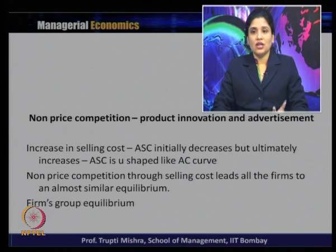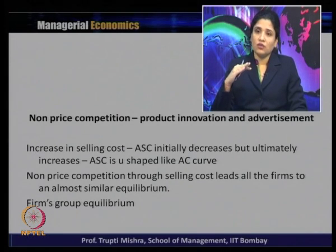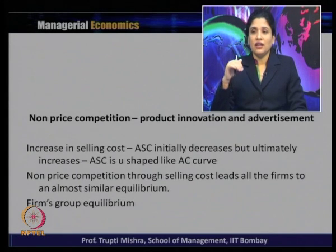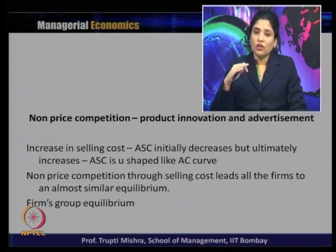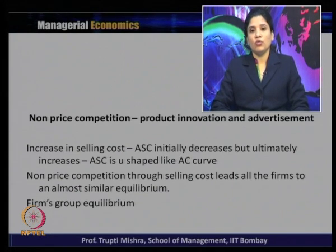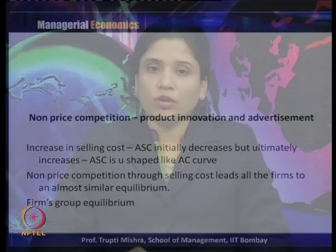Whenever there is an increase in selling cost, the average selling cost initially decreases, but ultimately increases, making it U-shaped like the average cost curve. The average cost is U-shaped because initially the firm gets economies of scale, then reaches minimum, then gets diseconomies of scale. The same shape applies to average selling cost. Non-price competition through selling cost leads all firms to an almost similar equilibrium — a group equilibrium.